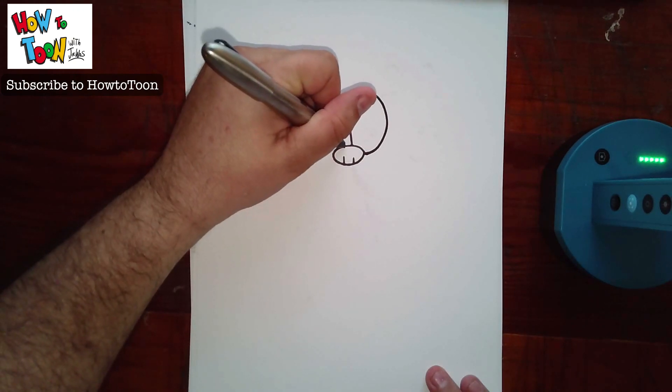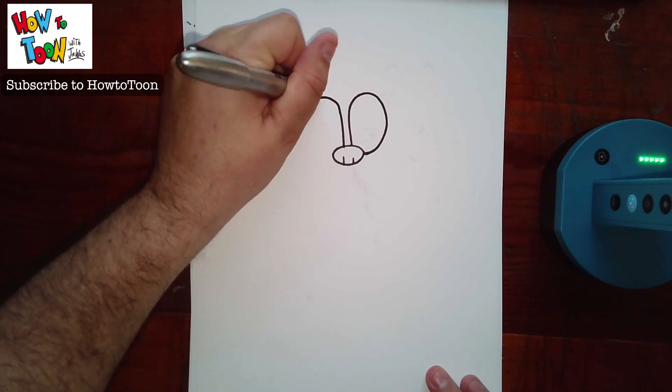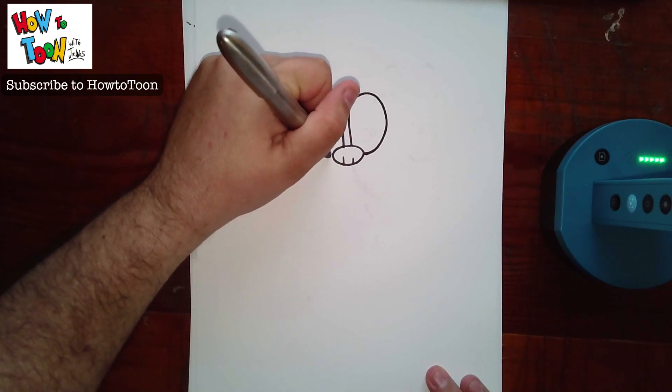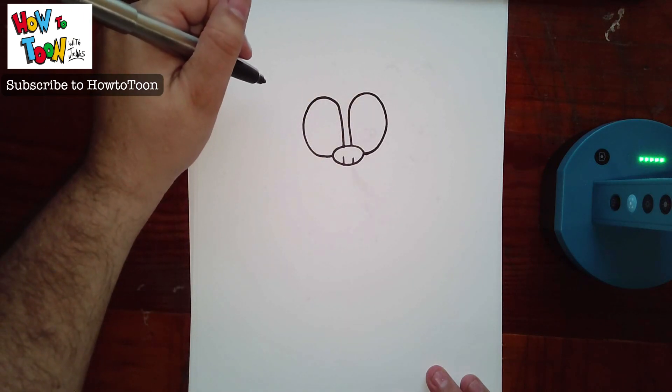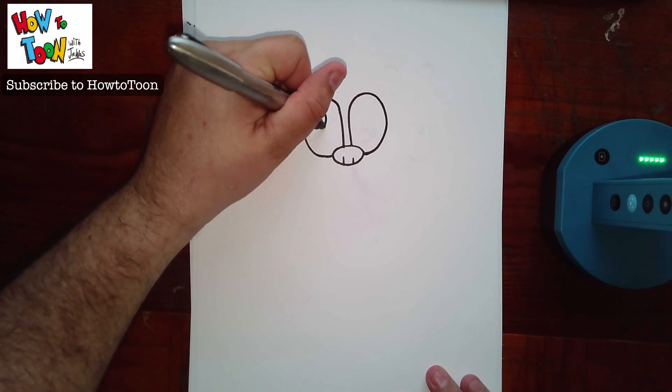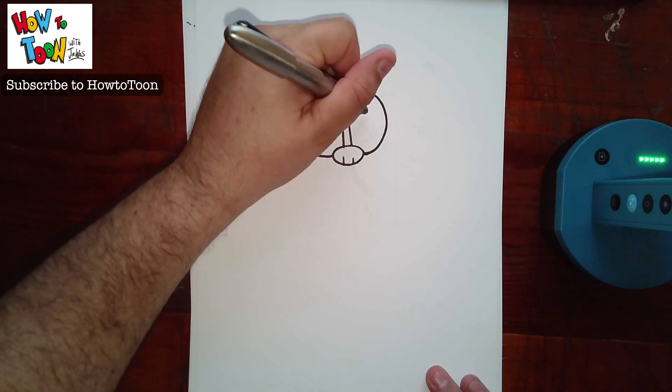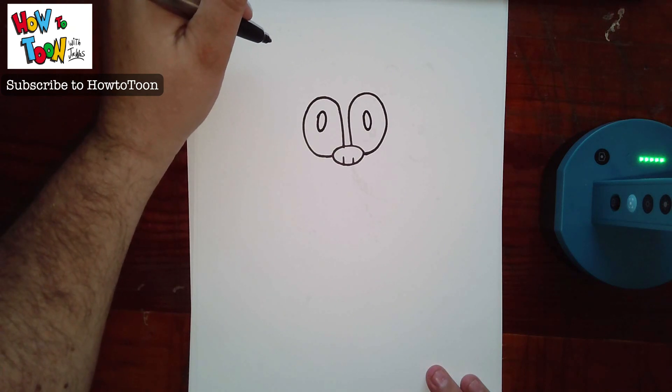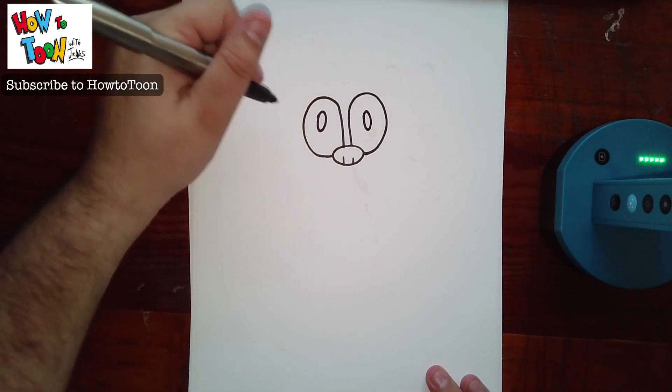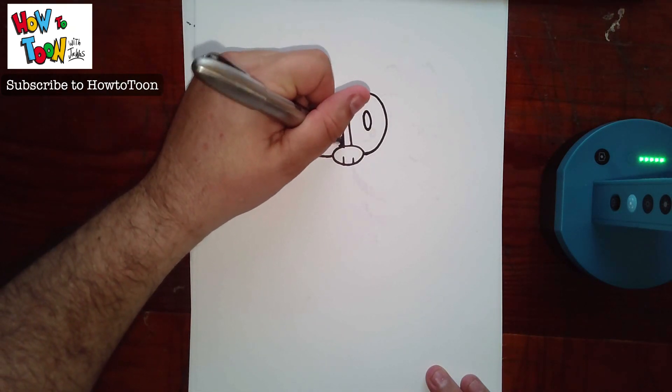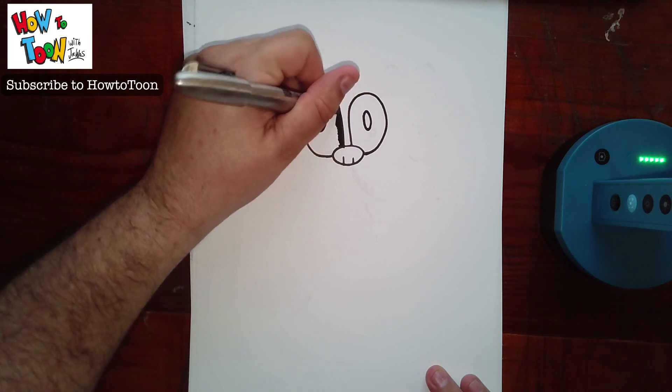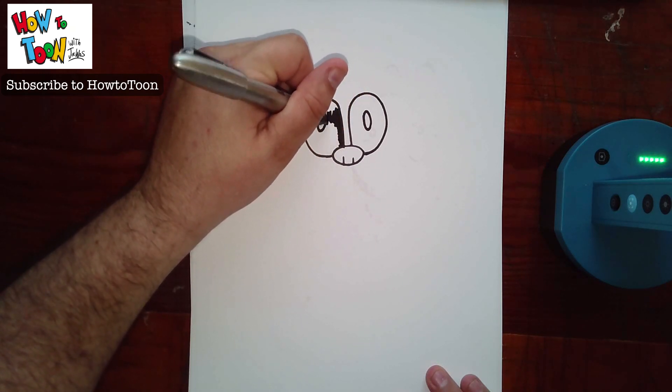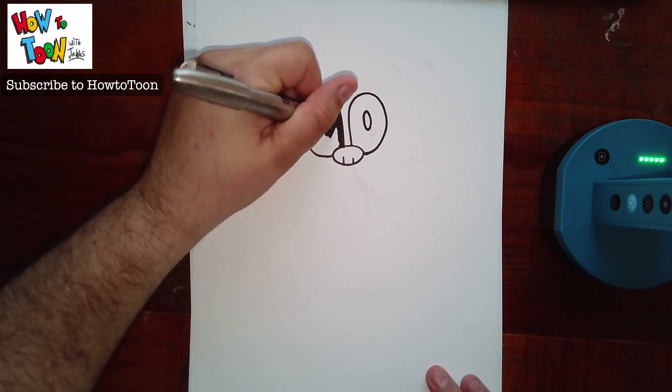Same thing on the other side. Up, around, and to the side. Now, you're going to add a white space here and a white space here. Now this is the most time-consuming part because I know that looks really weird, but what you're going to do is you're going to shade in all around this, except for those white spaces.